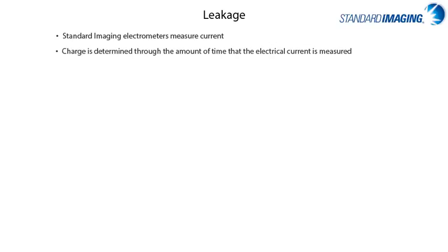Standard Imaging electrometers measure electrical current, not charge. A charge measurement is determined by multiplying the current by the accumulation time in seconds. All Standard Imaging electrometers' inherent leakage will never exceed ±0.25% of the expected signal — half of the IEC 60731 requirement of ±0.5%. This translates to roughly ±25 femtoamps for an Exradin A12 thimble-type ion chamber irradiated by a clinical linac. In the clinical setting, entire system leakage should be less than 0.5% of the expected signal.